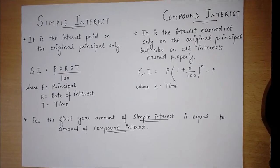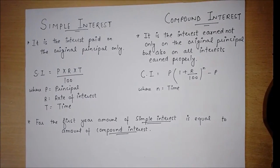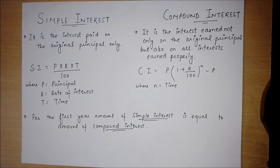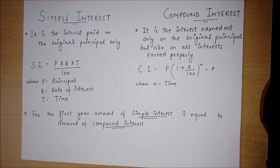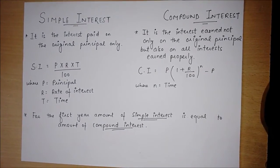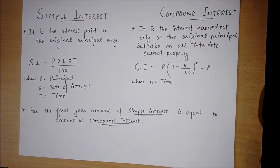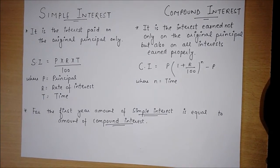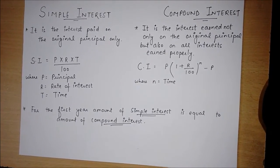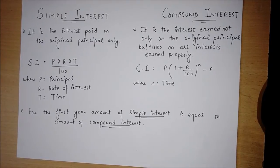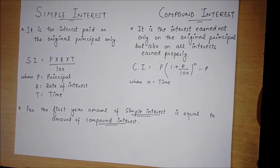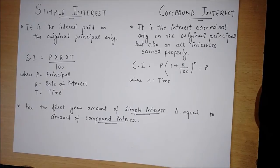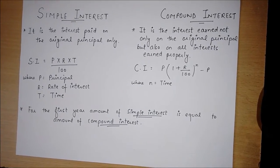Here we have the formula for simple interest: it is the product of principal, rate of interest, and time divided by 100. The formula for compound interest is the product of principal multiplied by bracket 1 plus r divided by 100, to the whole power n, minus principal, where n is the time.